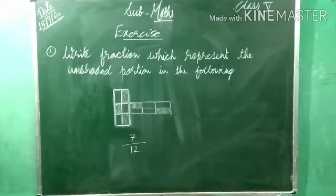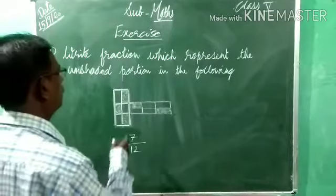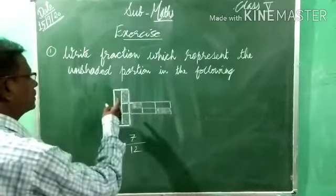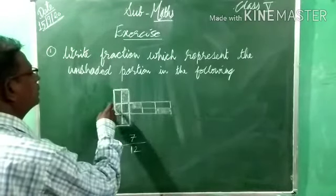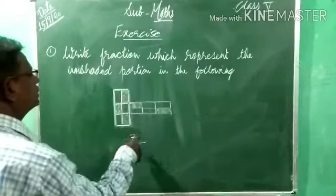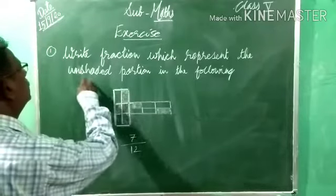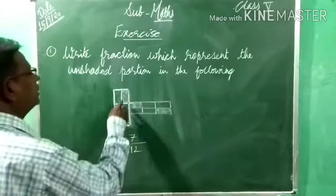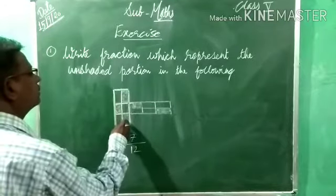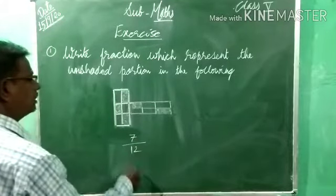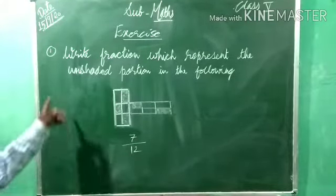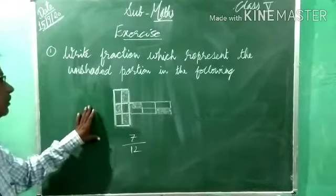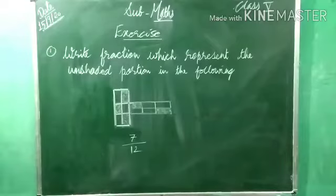Understood this example? If it is asked to write the fraction which represents the shaded portion, then how to write? Shaded parts: 1, 2, 3, 4, 5 — so shaded is 5 by 12. This is the fraction for the unshaded portion. Note down this one.